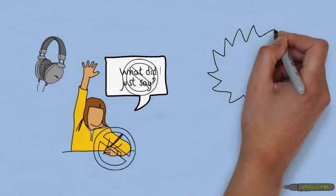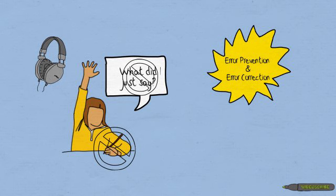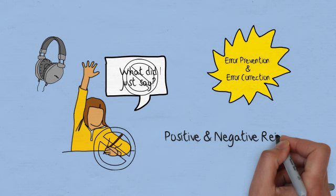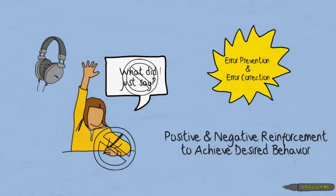Also, error prevention and error correction was heavily emphasized. In accordance with operant conditioning from behavioral psychology, correct responses should receive positive reinforcement, and negative responses received negative reinforcement, thereby encouraging the desired behavior.